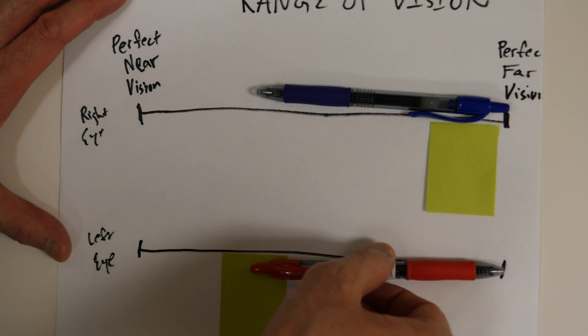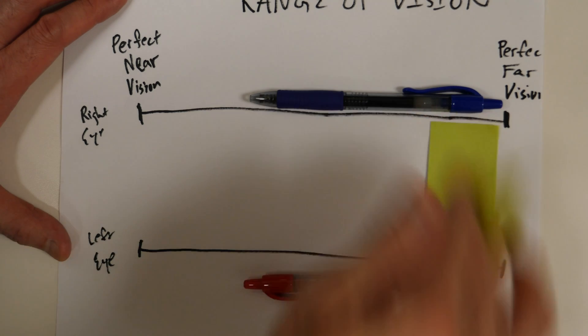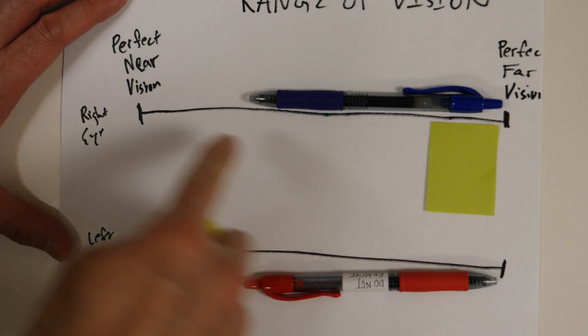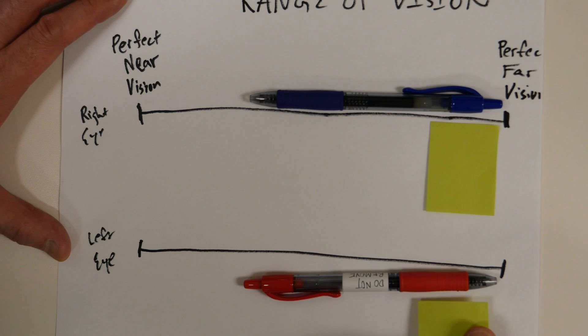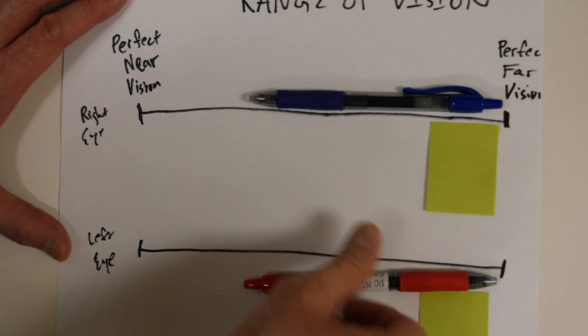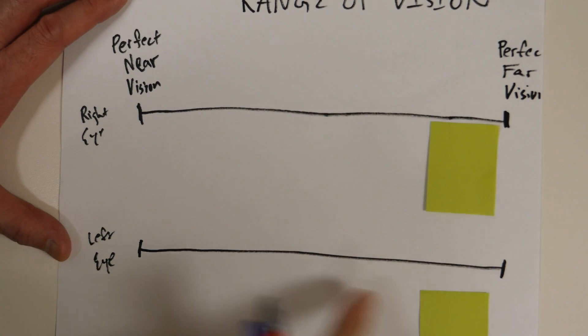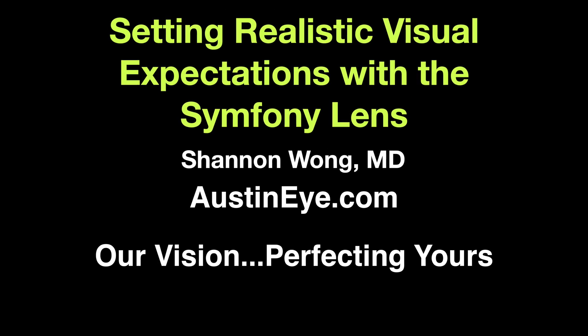The other way of looking at it is if both eyes are set to see far away with a Symphony, you'll see great far away, but you're going to need glasses to see up close. Similarly, if we give you a basic lens on both eyes, you'll see great far away, but you won't have anything mid or near. This is how we do it.